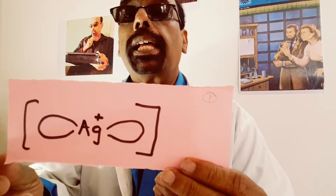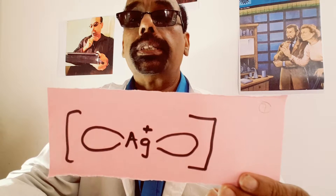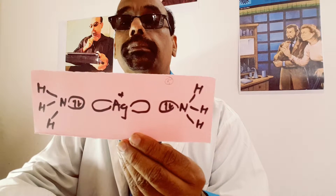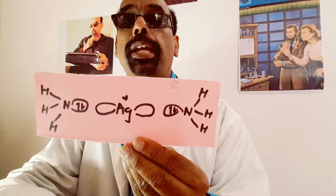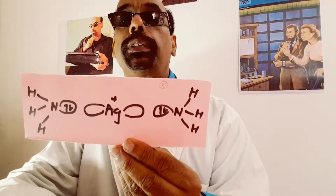Consider an ion such as the Ag⁺ (silver) ion. Ag⁺ has two vacant orbitals — two empty orbitals — and a positive charge. Two ammonia molecules can approach the silver ion; each lone pair overlaps with one empty orbital, and two dative bonds are formed.